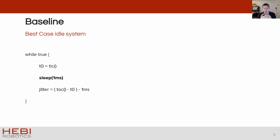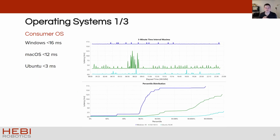Let's establish a baseline of what you can expect when working with various components, starting with operating system jitter. We had different operating systems continuously sleep for a millisecond over a period of 24 hours and then measured the jitter of the resulting ticks. These were completely idle systems, so this is about the best you can expect without extra tuning or real-time extensions. For consumer operating systems, we got results of below 3 milliseconds for Ubuntu and about 10 to 16 milliseconds for Windows and Mac. Newer Linux kernels perform even better, but it's roughly in the same ballpark.